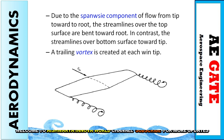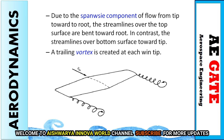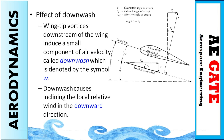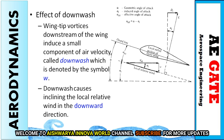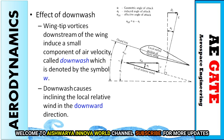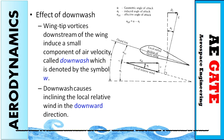This wing tip effect can be reduced by creating winglets to reduce the induced drag. Now let's focus more on the effect of downwash. The wing tip vortices downstream of the wing cause a small induced component of air velocity, called downwash, indicated by the symbol small w.